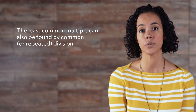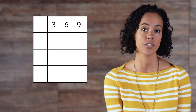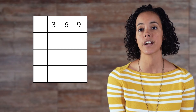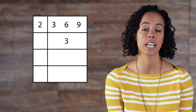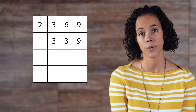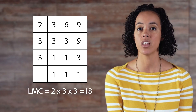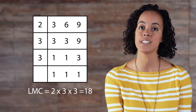The least common multiple can also be found by common or repeated division. This method is sometimes considered faster and more efficient than listing multiples and finding prime factors. Here's an example of finding the least common multiple of 3, 6, and 9 using this method. Divide the numbers by the factors of any of the three numbers. 6 has a factor of 2, so let's use 2. 9 and 3 cannot be divided by 2, so we'll just rewrite 9 and 3 here. Repeat this process until all of the numbers are reduced to 1, then multiply all of the factors together to get the least common multiple.